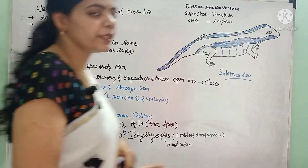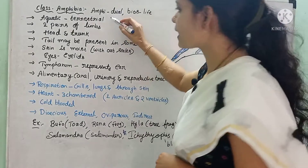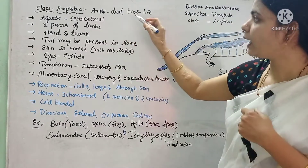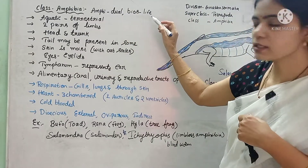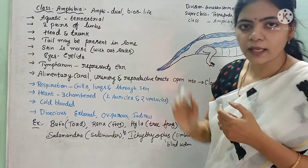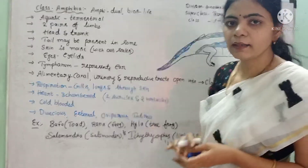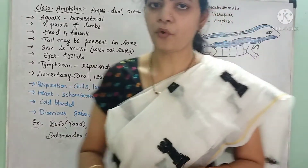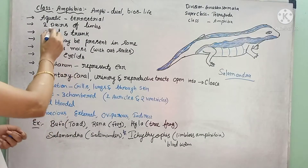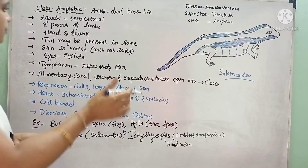These amphibians — the meaning of the word is: 'amphi' means dual and 'bios' means life. That means these animals live both on land and inside the water. They are aquatic and terrestrial.